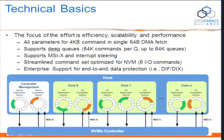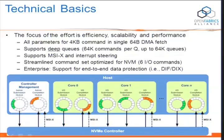The whole focus of this effort has been around efficiency, scalability, and performance. Some of the capabilities supported by NVM Express: all parameters for 4-kilobyte commands are in a single 64-byte DMA fetch. NVM Express supports deep queues — 64K commands per queue, up to 64K queues. It supports MSI-X and interrupt steering. It's a streamlined command set optimized for NVM, with basically six I/O commands. On the enterprise side, there is support for end-to-end data protection, including DIF and DICS. NVM Express operates on a paired submission/completion queue mechanism, supporting multiple submissions, with a typical architecture supporting a submission/completion queue for each core.